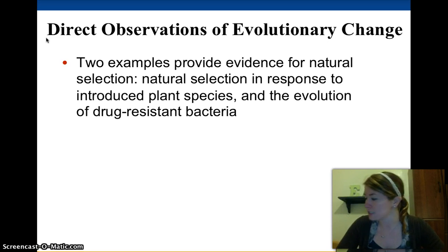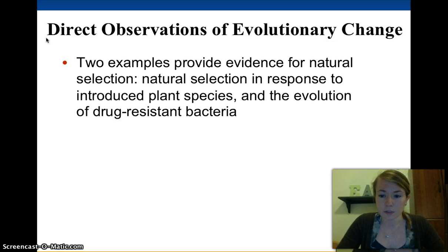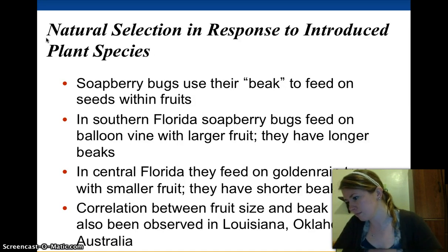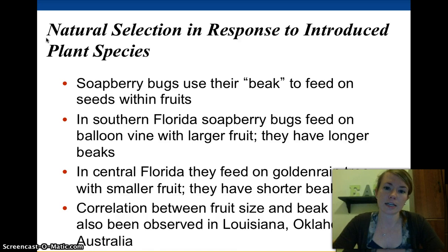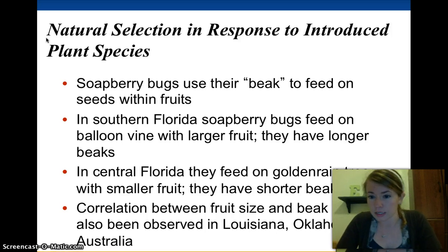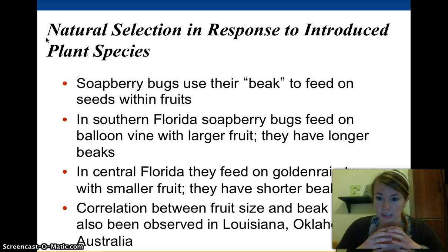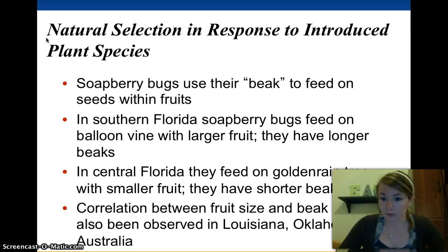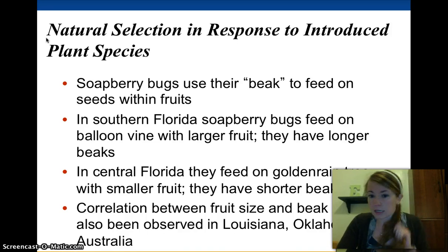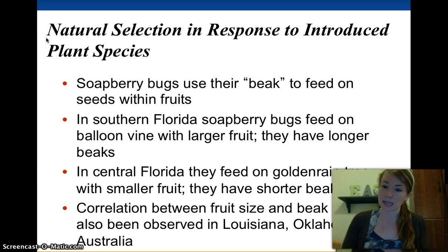So the first one is direct observations of evolutionary change. We actually have been able to see evolutionary change happening. There are two examples the textbook gives: natural selection in response to introduced plant species, and the evolution of drug-resistant bacteria. Your textbook talks about predation and coloration in guppies, but this one talks about soapberry bugs. They have a beak they use to eat seeds from inside of fruit — small fruit have seeds closer to the outside, bigger fruit have seeds further from the outside. Scientists observed that bugs feeding on smaller fruit had smaller beaks, whereas bugs feeding on bigger fruit had much longer beaks.